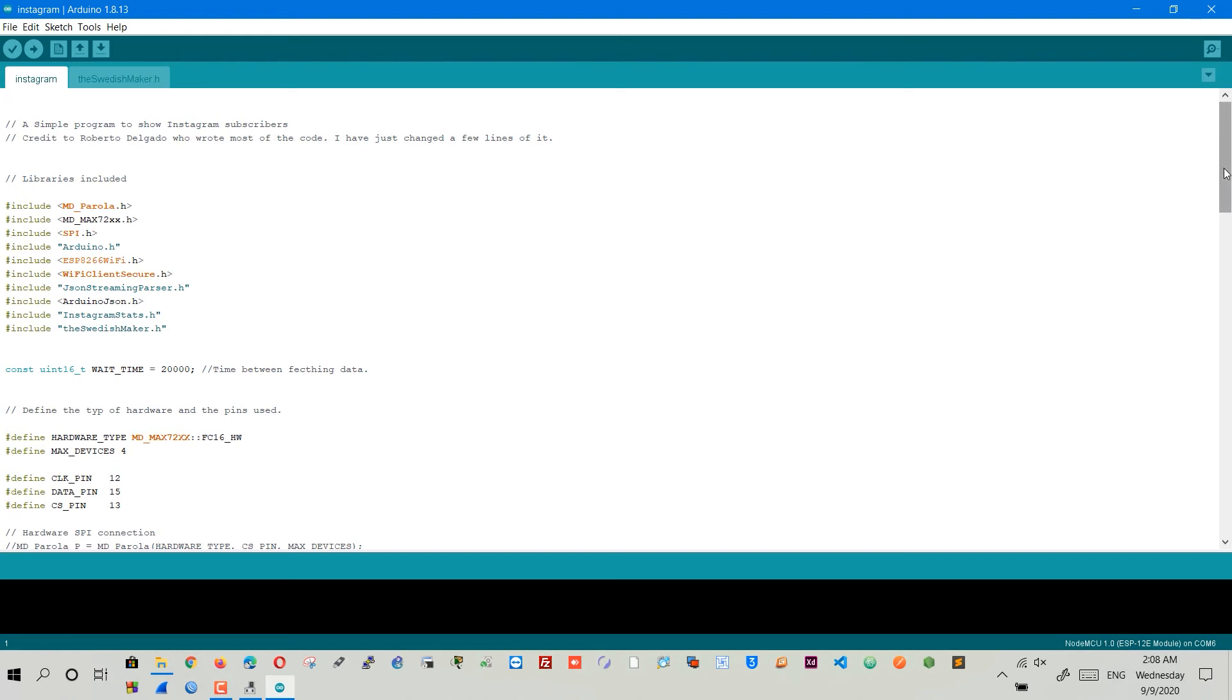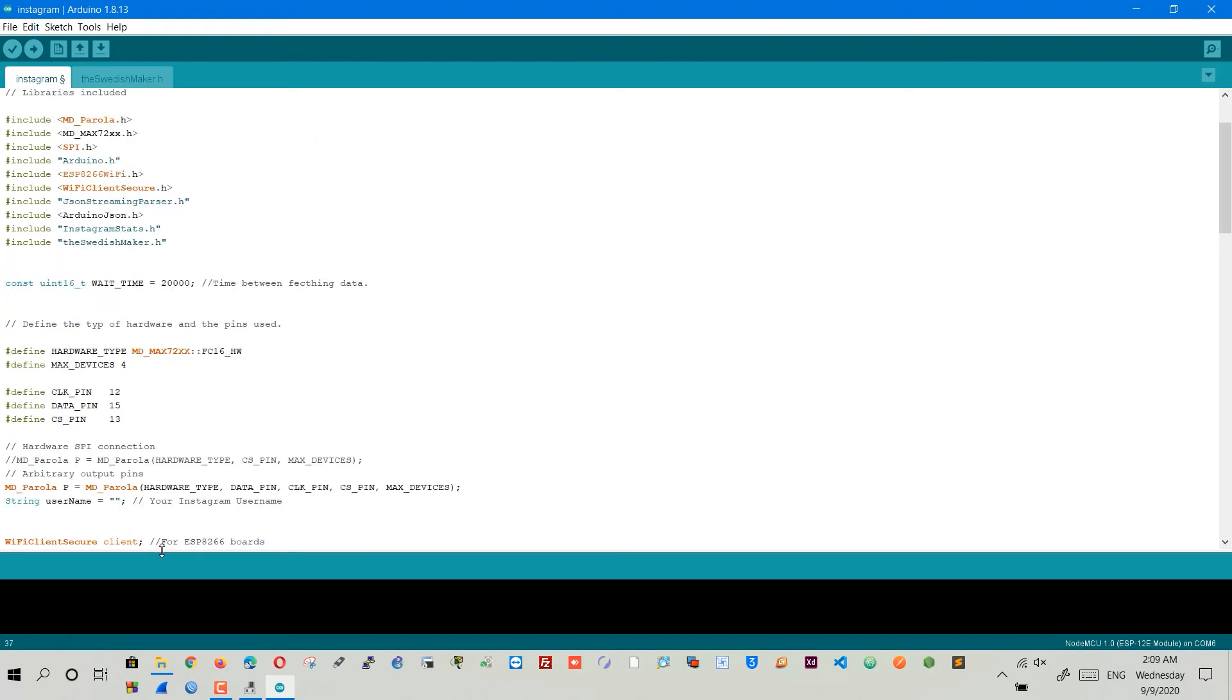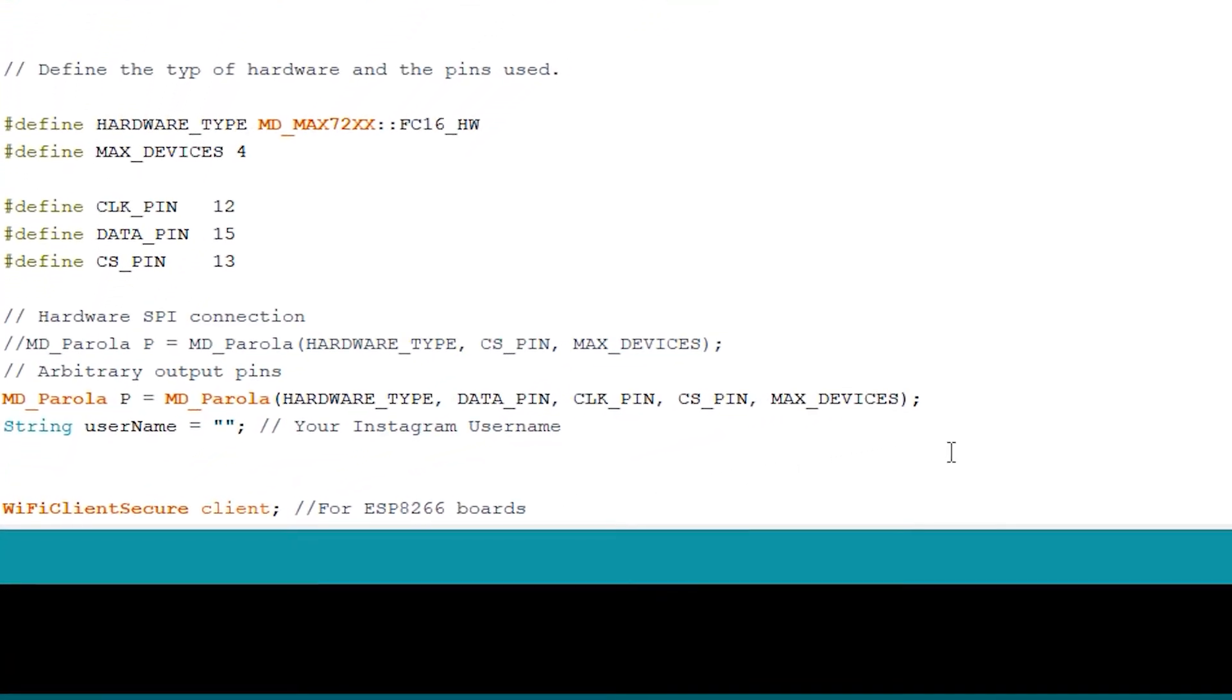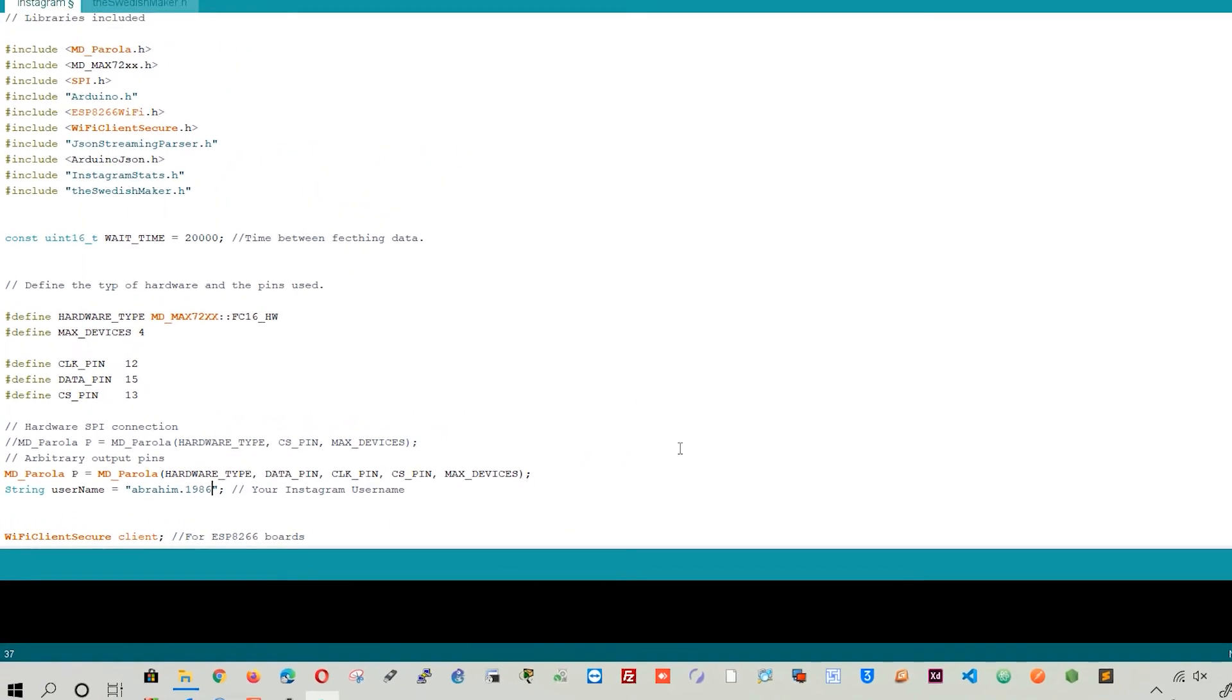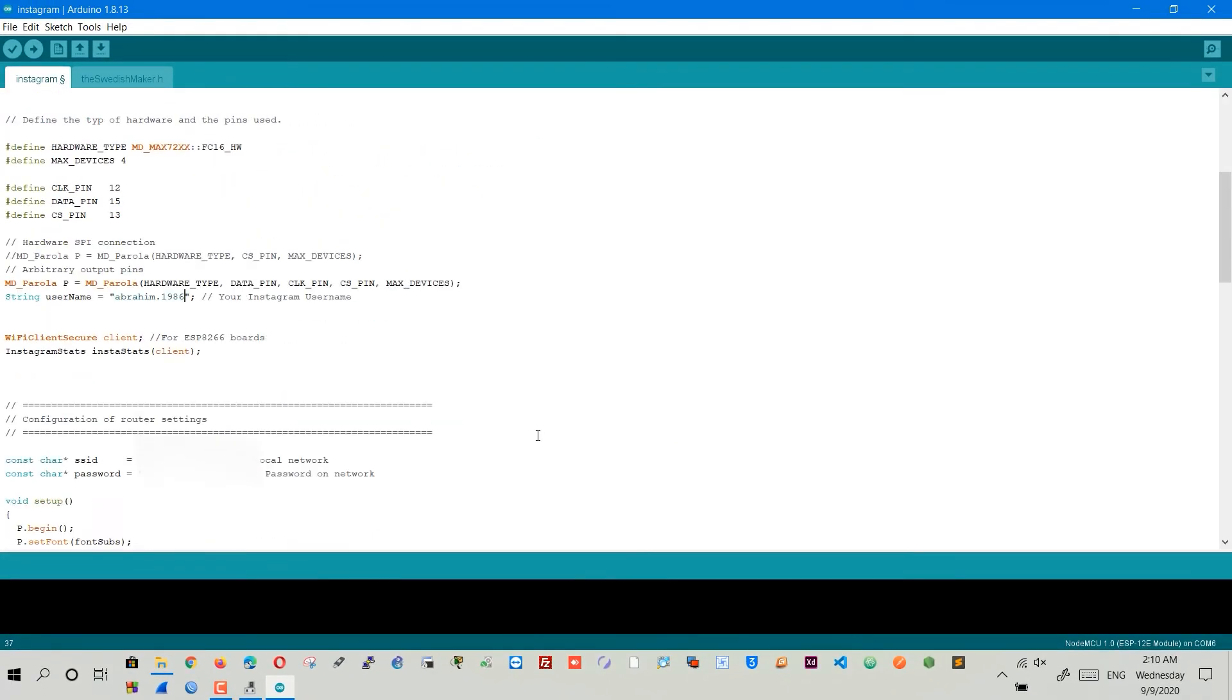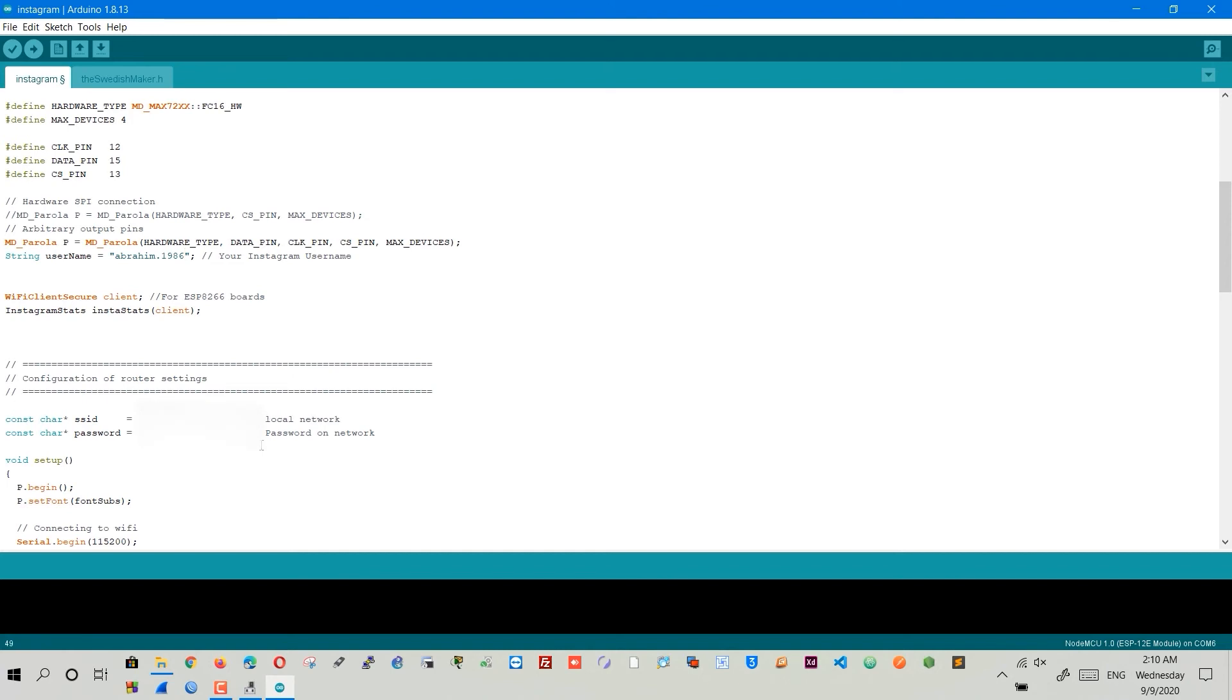Now look at the codes and change the username string to your Instagram ID. Scroll down and add your Wi-Fi SSID and password.